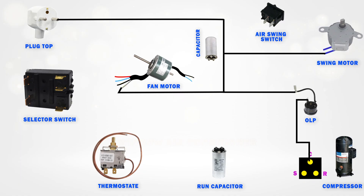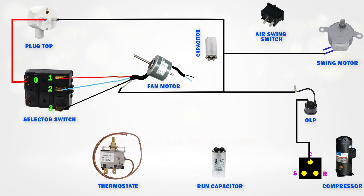Wiring the phase supply. From the right pin of the plug top, connect a wire to the P terminal, marked as 0, on the selector switch. From terminal 1 of the selector switch, connect to the red wire for low speed. From terminal 2, connect to the blue wire for medium speed. From terminal 3, connect to the black wire for high speed.